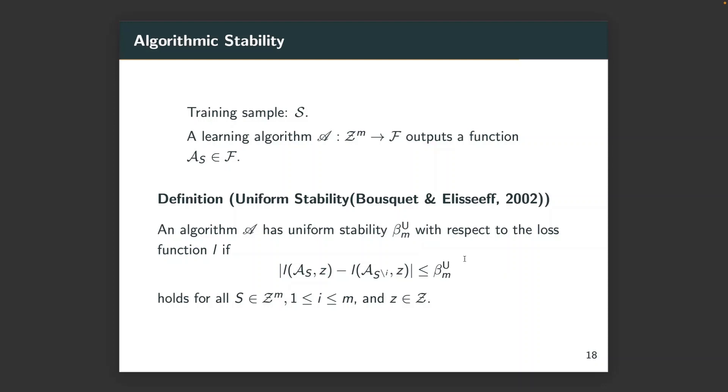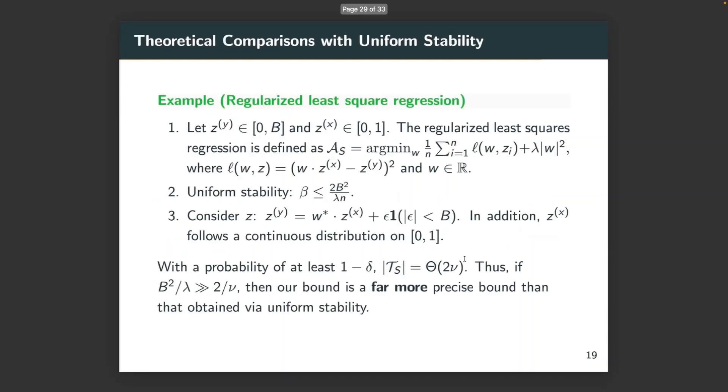As another concrete example, we want to compare with uniform stability. Algorithmic stability is the key to ensure generalization ability of a learning algorithm. Among different notions, uniform stability is arguably the most popular one, which yields tight generalization bounds. We consider regularized least square regression, which is the risk minimizer with L2 penalty. For simplicity, we only consider one dimension case for the parameter. We can show that when the data distribution is assumed to be a linear model with outlier, our bound can be much tighter than the one obtained via uniform stability, as long as p squared divided by lambda is very large. Here, lambda is the penalty coefficient.